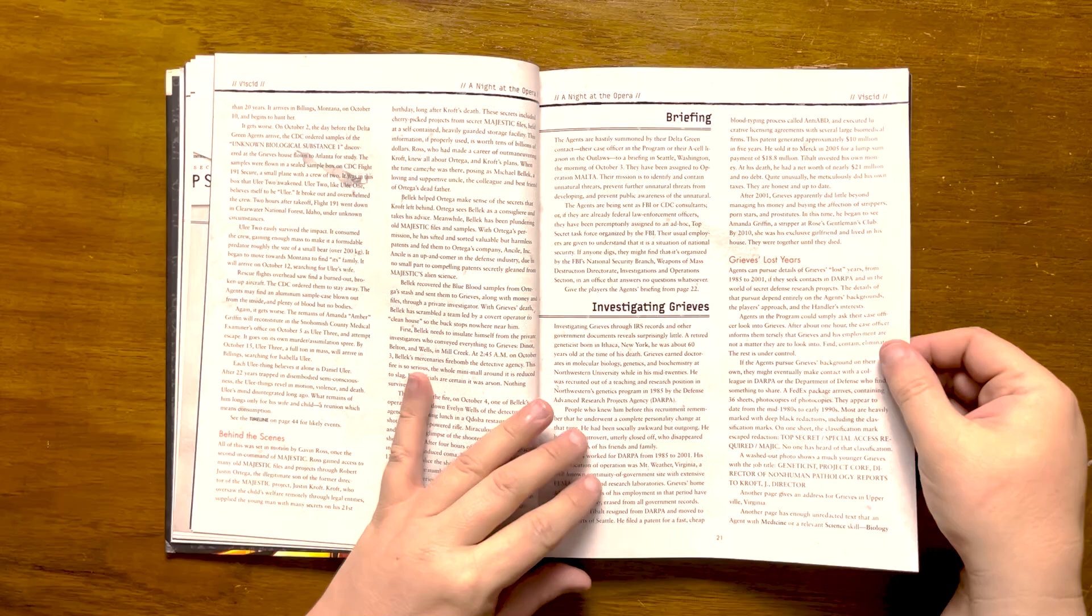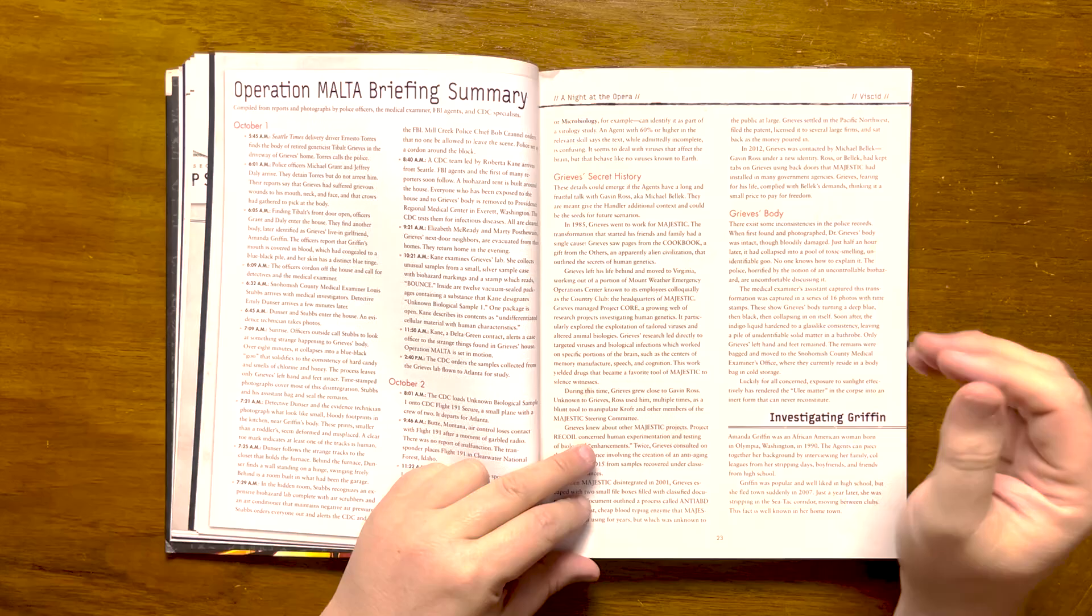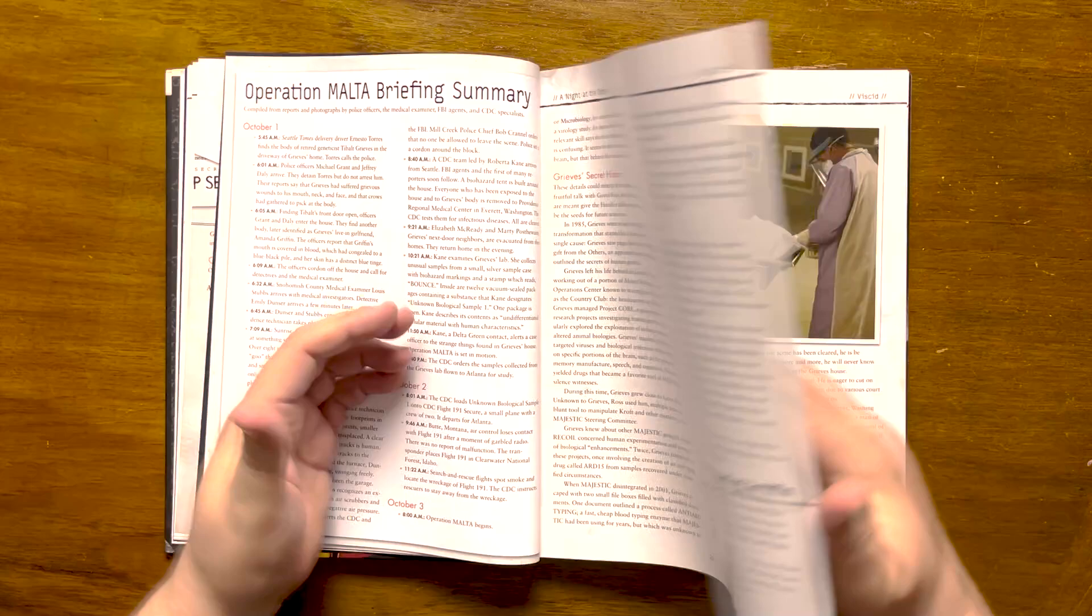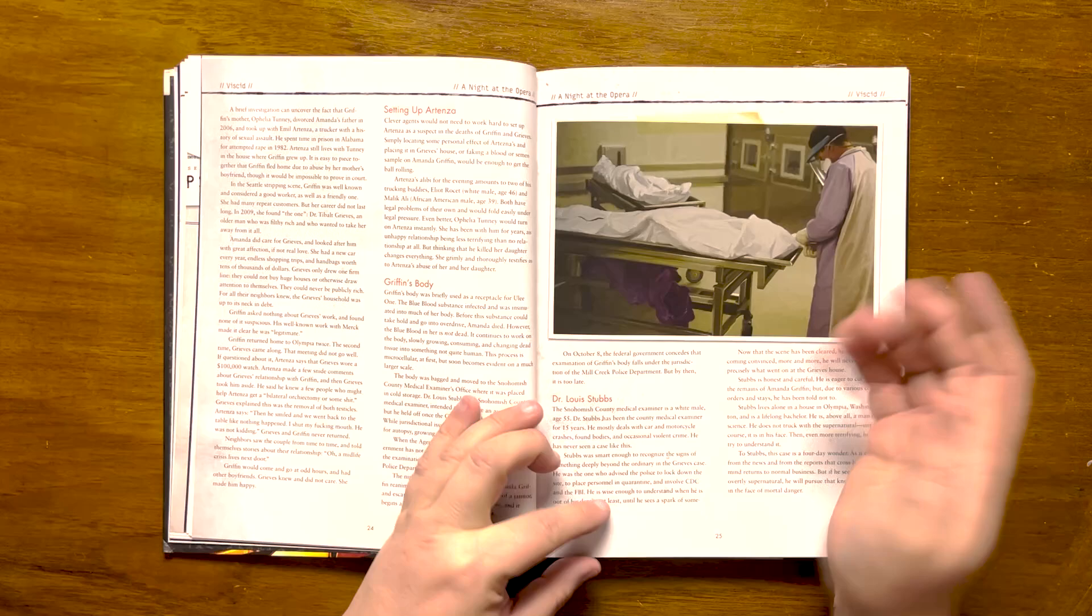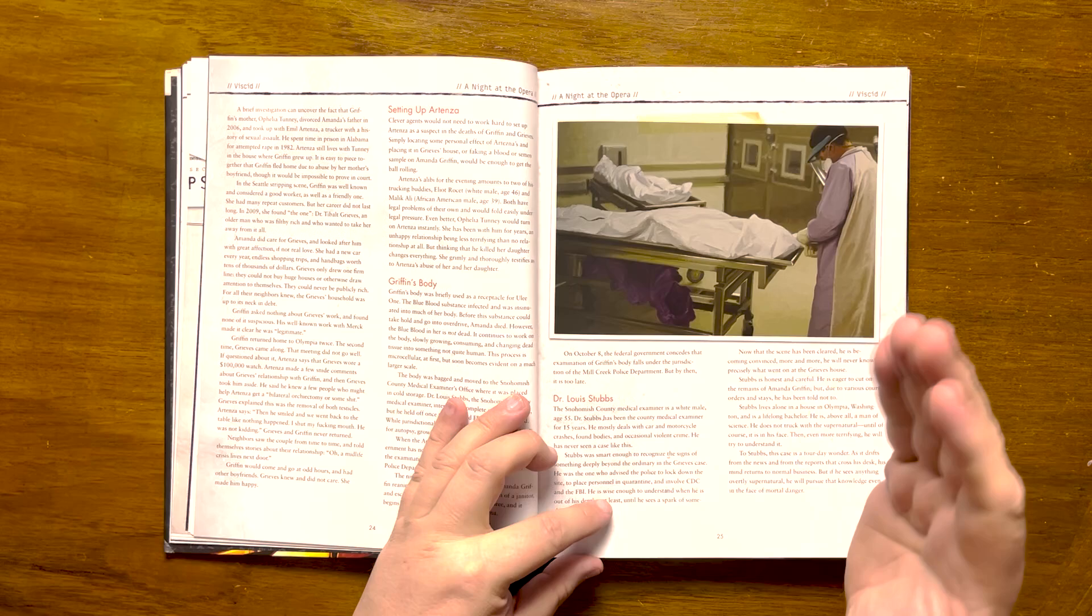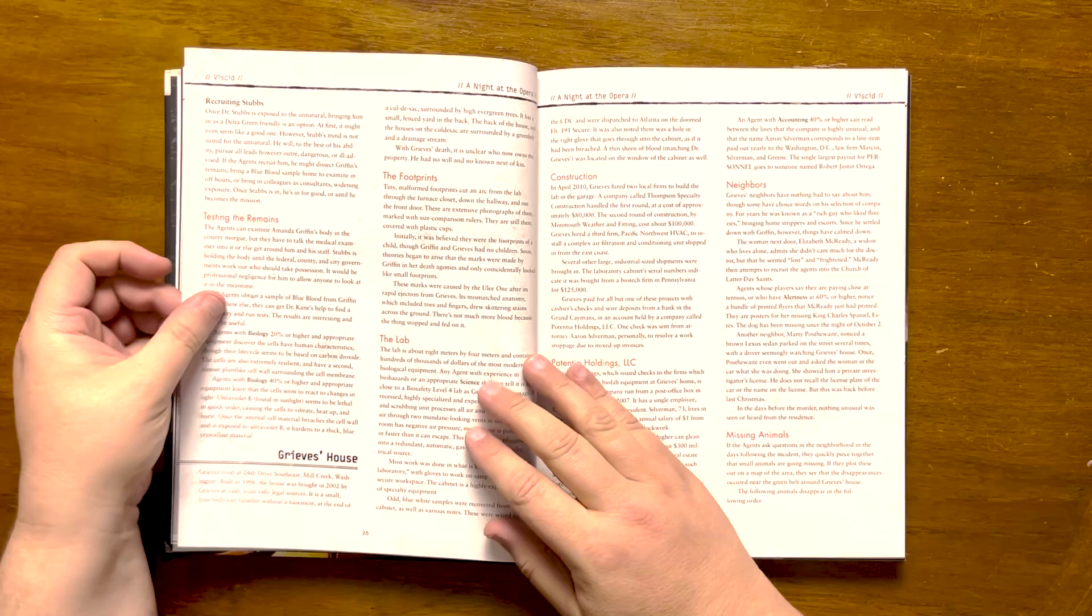It then goes on to show how they can investigate Greaves' girlfriend, Amanda Griffin. As mentioned previously, her body was moved to the morgue for further analysis but will erupt into Uli thing 3 on October 5th. It also gives information on the resident medical examiner, Dr. Louis Stubbs, and how he can actually be recruited. Although given his tenacity to pursue all the years to the bitter end, it may cause him to actually become the mission. It also demonstrates how the players can examine Amanda's remains and discover the blue blood compound.